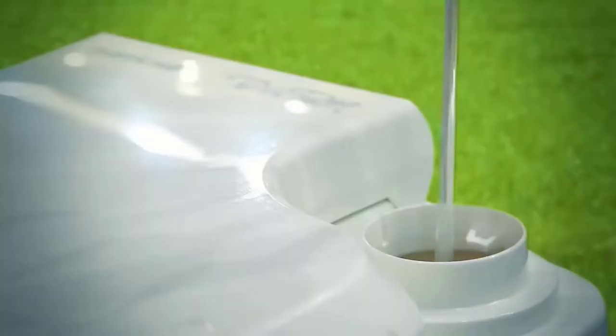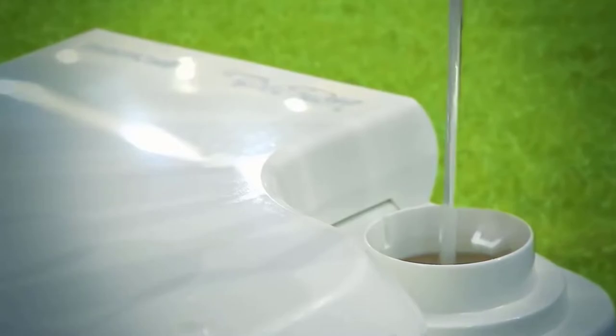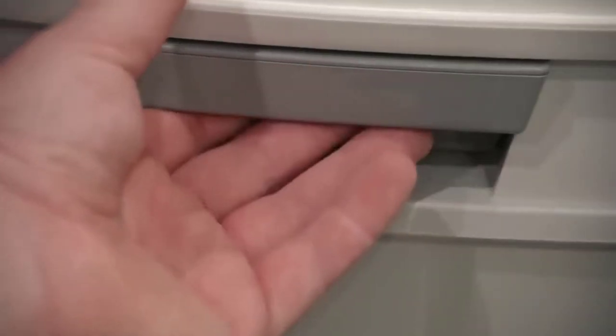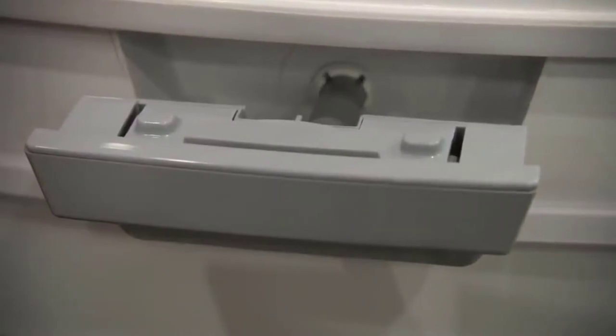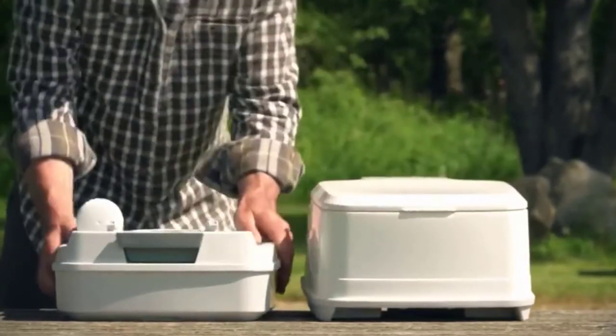The waste tank holds a 5.5 gallon capacity, so expect that it becomes heavier in every use. You don't need to be anxious about filling it up with excessive fresh water or waste contents since this porta potty comprises an automatic tank level indicator for easy tracking.